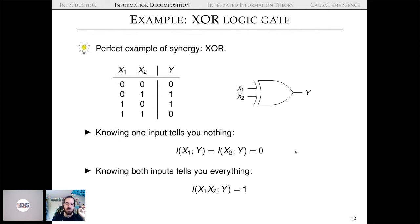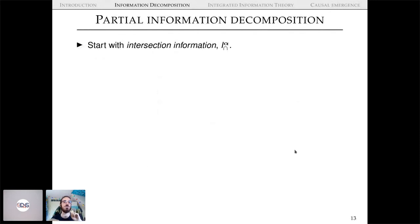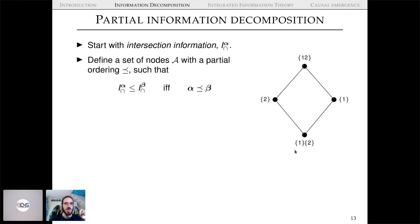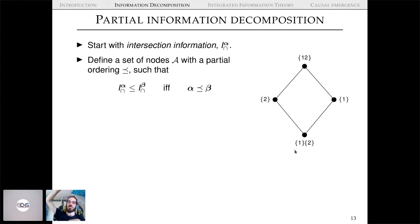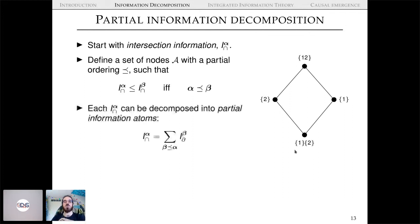To extend PID, let's distill the key mathematical ingredients. To make a PID we start with an intersection information Î — also called the shared information or redundancy function — which tells you how much information is shared in a bunch of sources α. We also need a lattice with a partial ordering such that this intersection information grows from bottom to top.